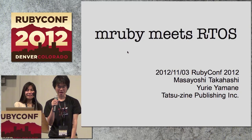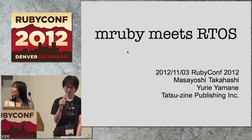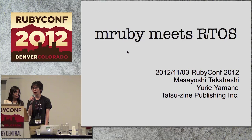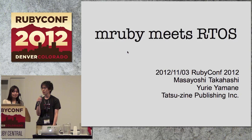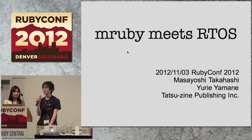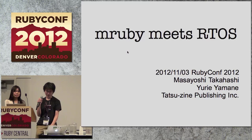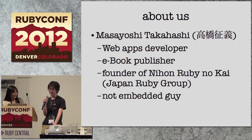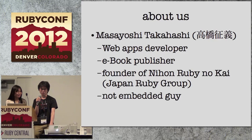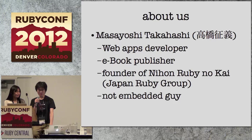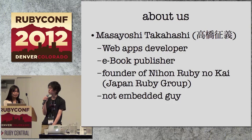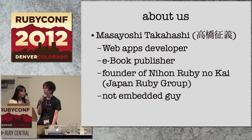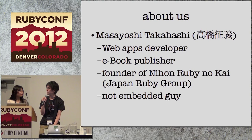The second part of the talk is titled 'mRuby meets RTOS.' First, let us introduce ourselves. I'm Masayoshi Takahashi, a Rubyist and web application developer, e-book publisher, and the founder of Nihon Ruby no Kai — the Japan Ruby Group. I'm not an embedded guy; I'm very new to the embedded world. And I'm Yulie Yamane, a hobby programmer interested in embedded systems.